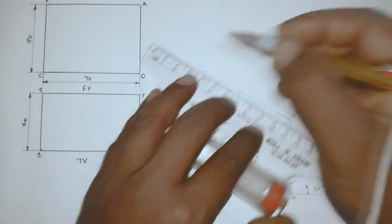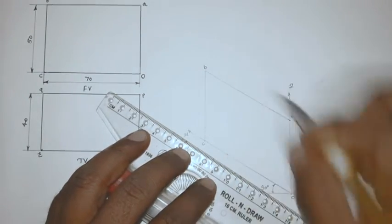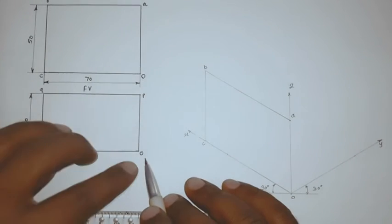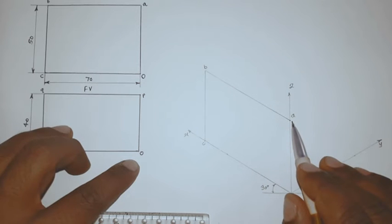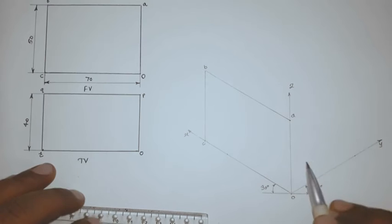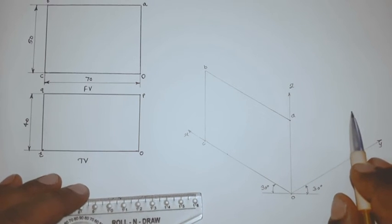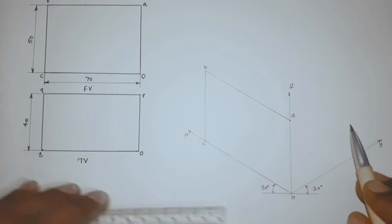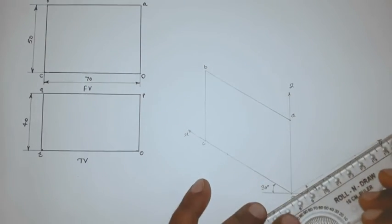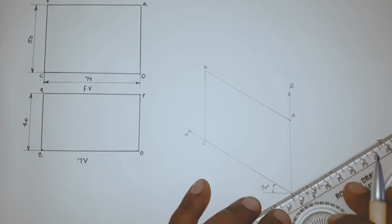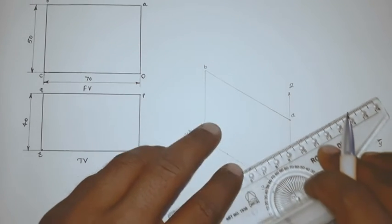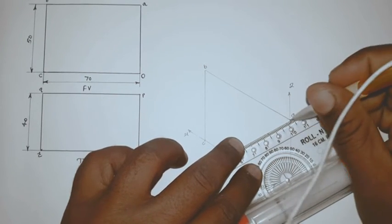Then after this, we are going to locate the top view. So see here, the O is here, it means O will overlap with the A. Then our P will be on this side, on the left side of this A by 40mm distance. So firstly, plot here parallel to this line, draw a line of 40mm length.